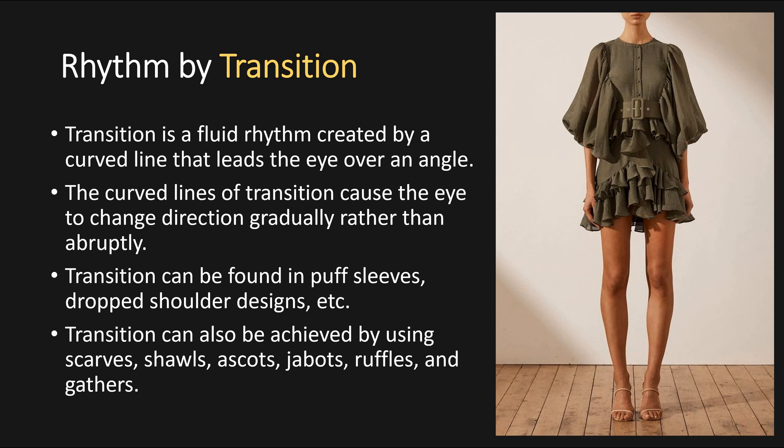Rhythm by transition is a fluid rhythm created by a curved line that leads the eye over an angle, causing your eyes to change direction gradually rather than abruptly. It can usually be found in puffed sleeves, dropped shoulders, or ruffles. Shawls, ascots, jabots, ruffles, and gathers can also be used. Here it can be done with puffed sleeves as well as ruffles on the skirt and in the shirt.